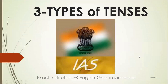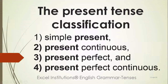So someone may become an IAS officer. Now, present tense can be classified into four: simple present tense, present continuous, present perfect, and present perfect continuous. Similarly, past tense has simple past, past continuous, past perfect, and past perfect continuous. And future tense has simple future, future continuous, future perfect, and future perfect continuous.